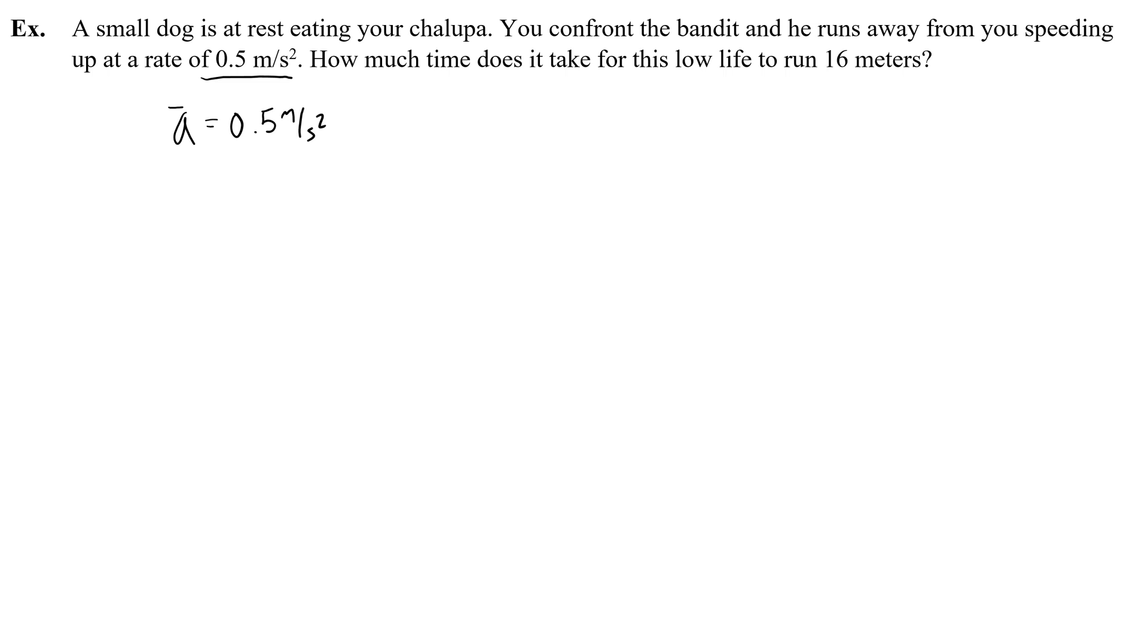So acceleration equals 0.5 meters per second squared. The next thing I notice that it gives me is this 16 meters. What I like to do is I like to say the final position is 16 meters and the initial position, x-naught, is 0. It also says the dog is at rest. That is a key given piece of information. It tells me my v-naught, my initial velocity, is 0. So I've got a, x, x-naught, v-naught. That's my given information.